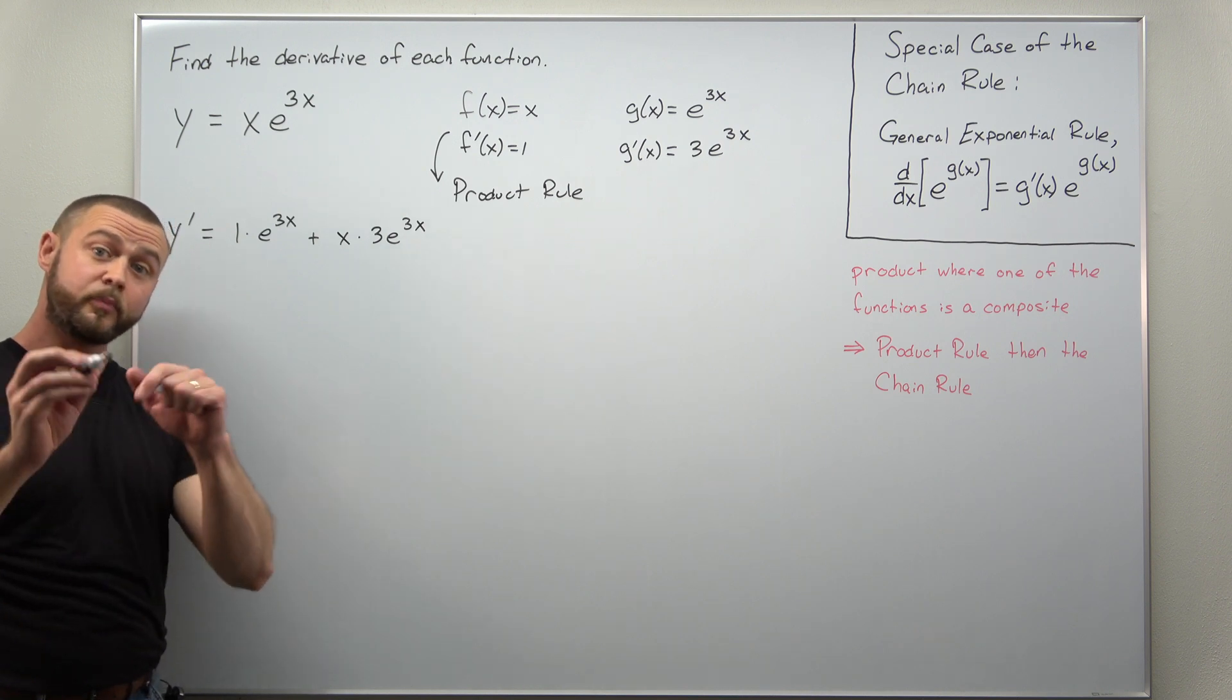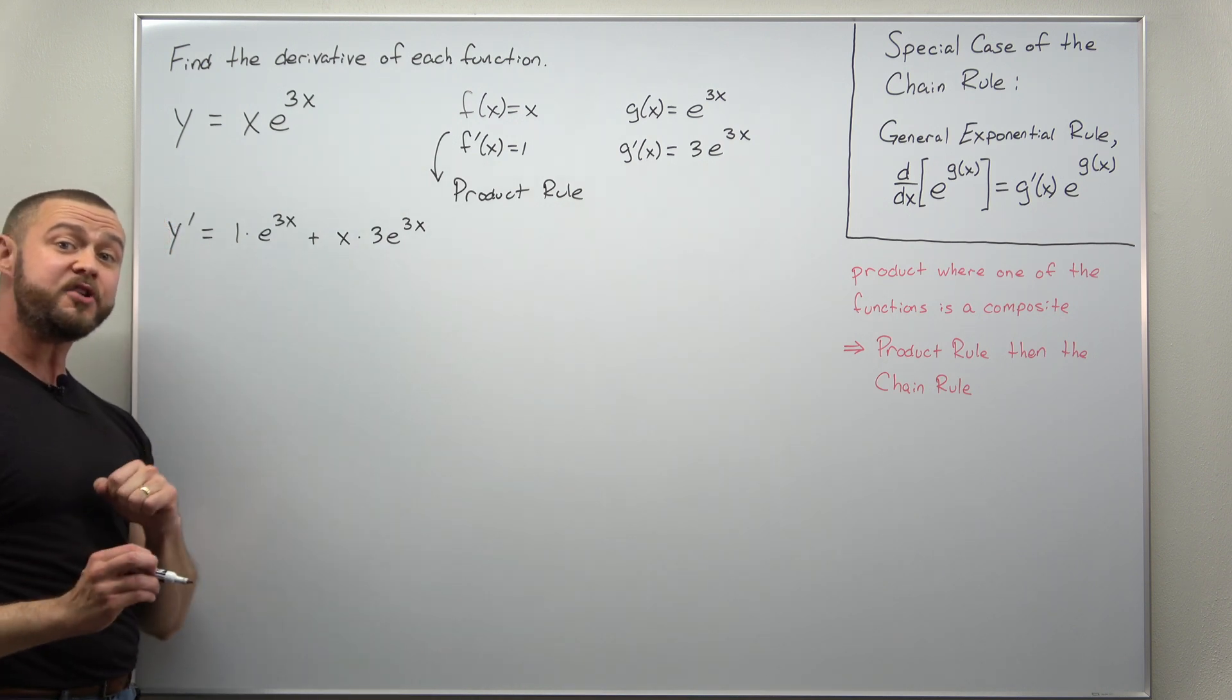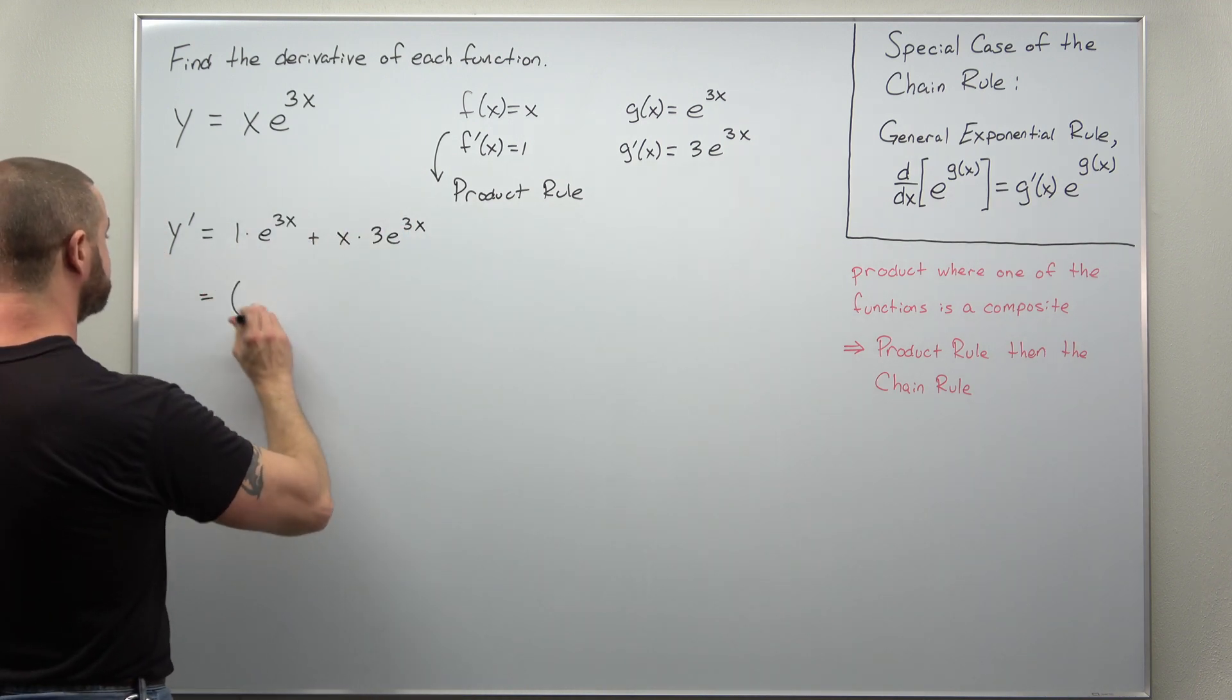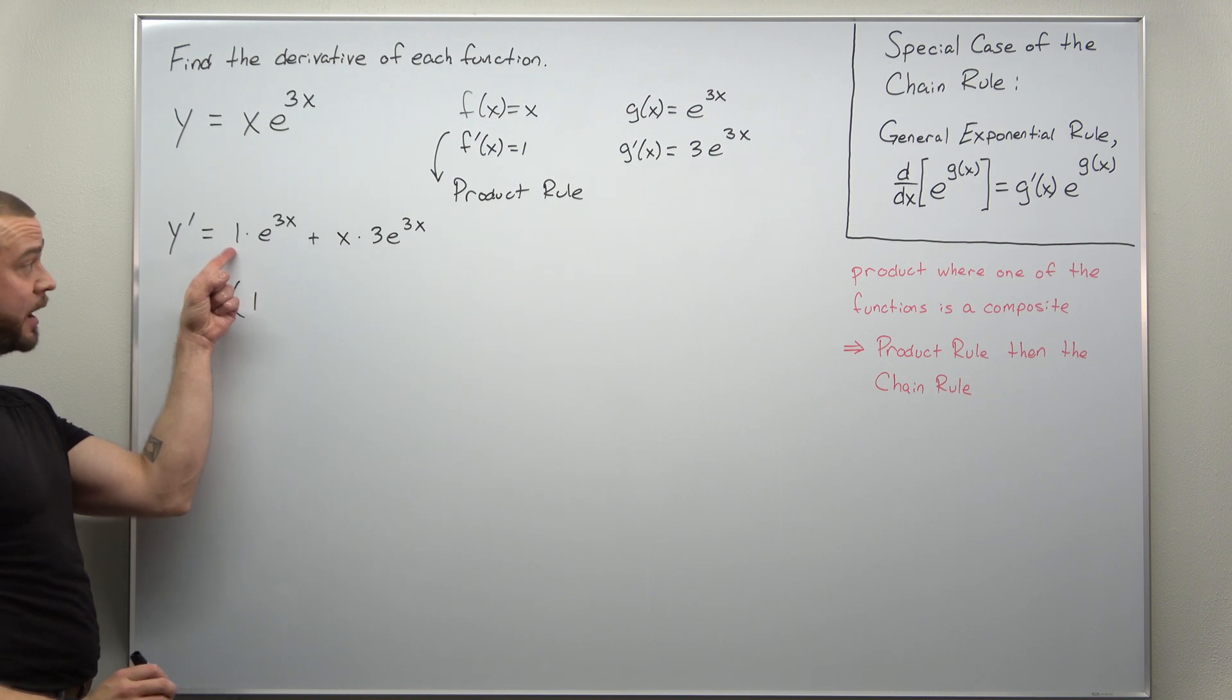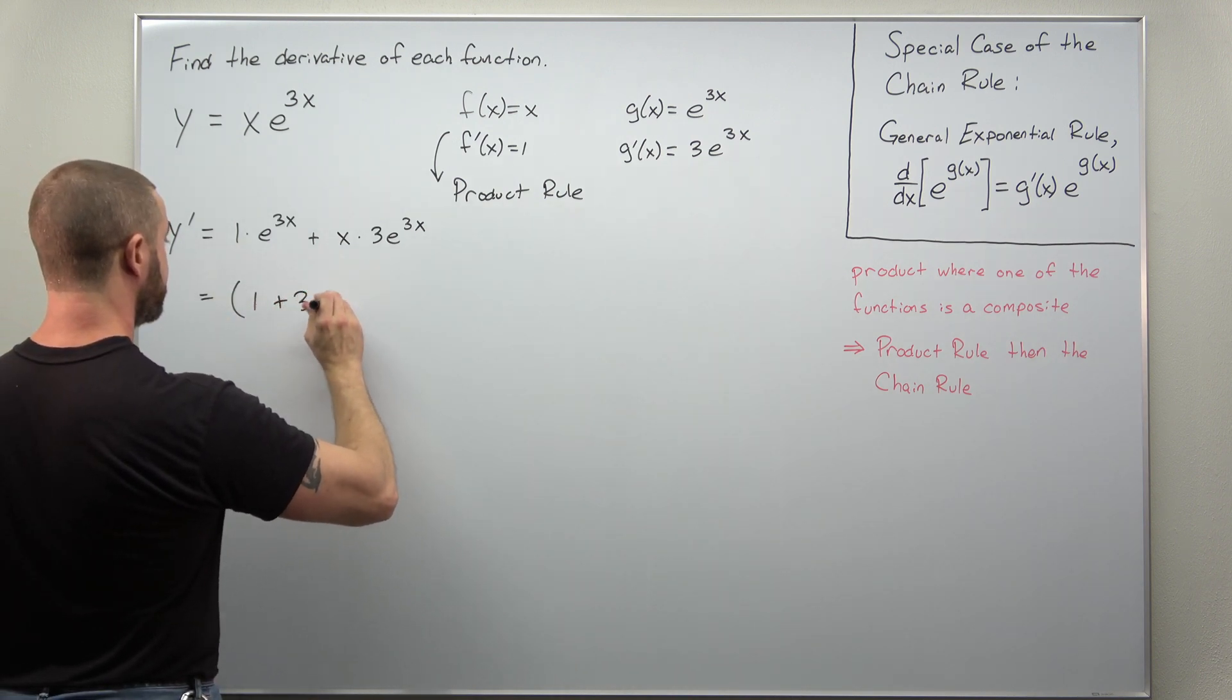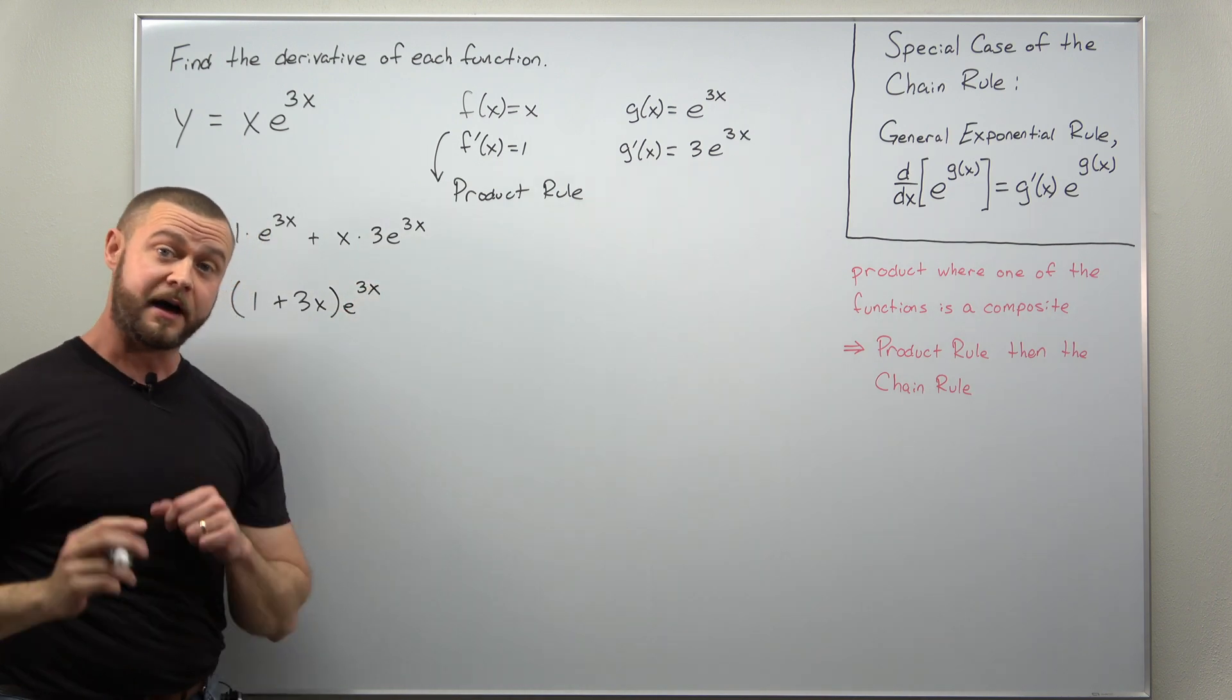That's it. We can simplify this considerably by noticing that we have exponential factors in each term. So we can factor out e^(3x), and we'll be left with 1 + 3x. Then we have our factor of e^(3x) on the outside.